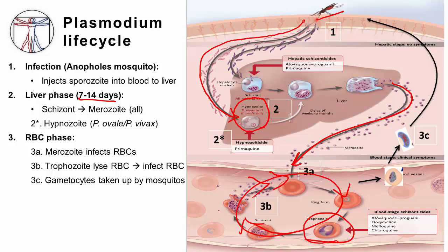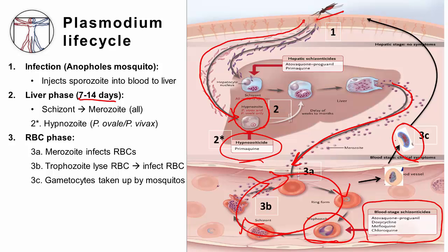We'll talk next about pathophysiology and why we have clinical disease. Most of the drugs that we use are active on the red blood cell phase, but there is one drug available for the treatment of the liver phase. One other thing to remember is that these organisms do have a sexual reproductive cycle as well. In the blood you can develop a gametocyte — often the banana-shaped gametocytes of plasmodium falciparum — and they get picked up by the bite of another Anopheles mosquito, where the sexual reproductive phase will take place.